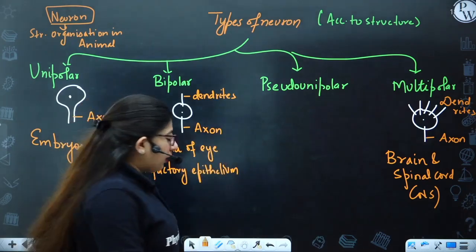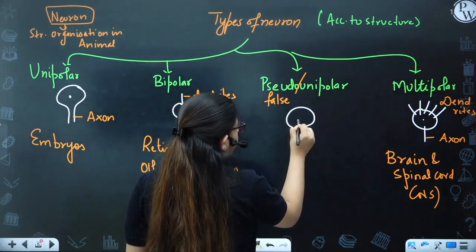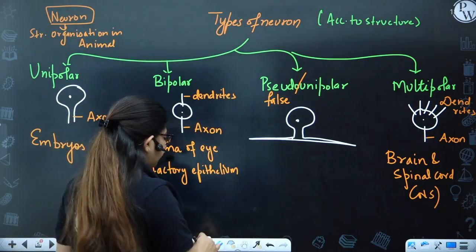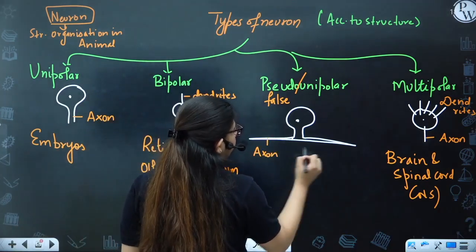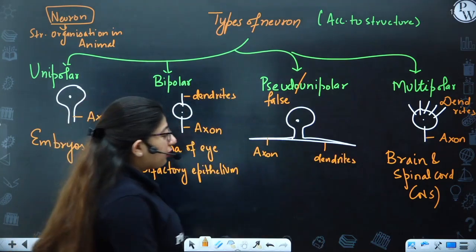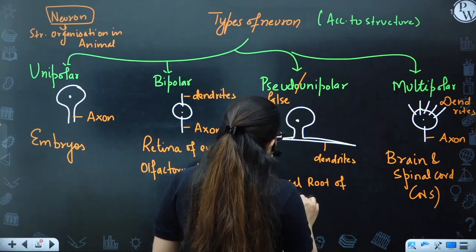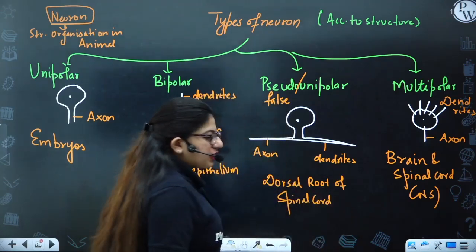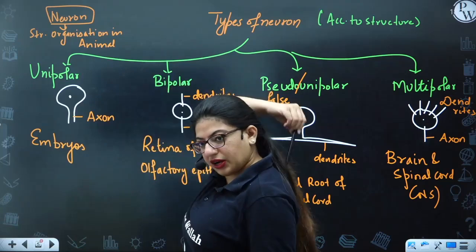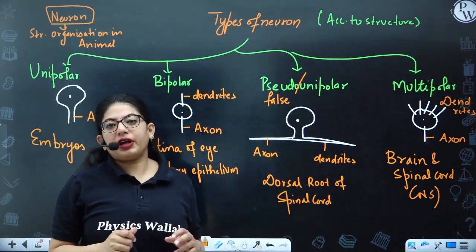Pseudo-unipolar: pseudo means false. It is a kind of neuron which was developed as unipolar, but later in life it decided to change. It bifurcates its one process — one becomes axon, another becomes dendrite. That's why you call it pseudo-unipolar. Where do you find it? In the dorsal root of the spinal cord. The spinal cord has two sides — dorsal and ventral. At the dorsal side, you find pseudo-unipolar type of neurons.